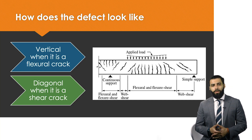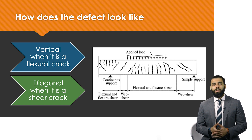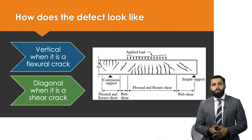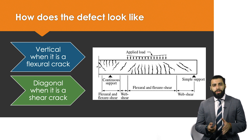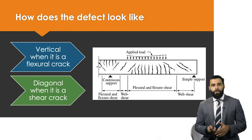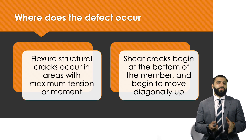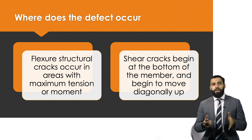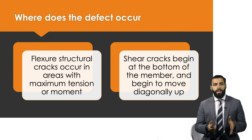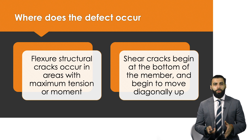How would the defect look if it were classified as a structural defect? There are two sorts of cracks you will see on a concrete member. These structural cracks — one is vertical, and that's when it's a flexural crack. The other is diagonal, and that's when it's a shear crack.